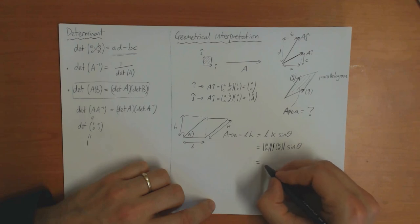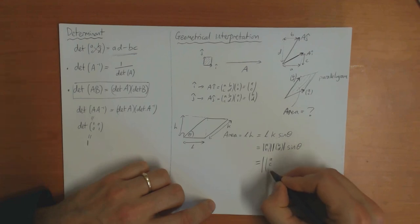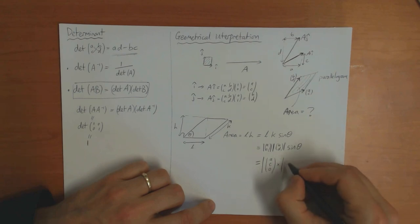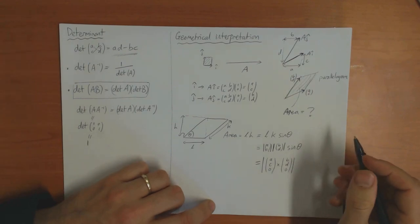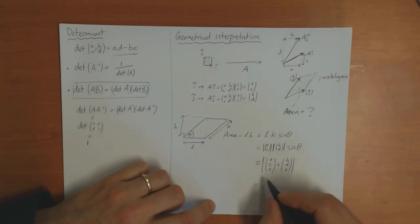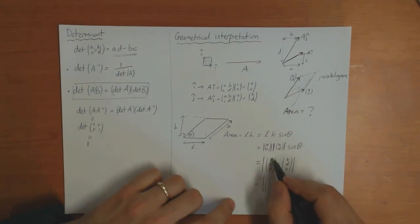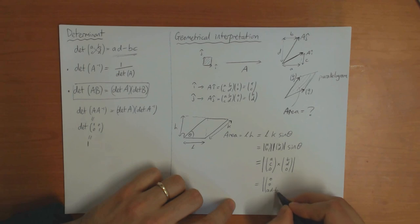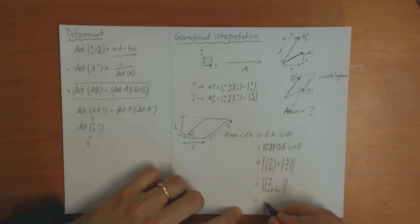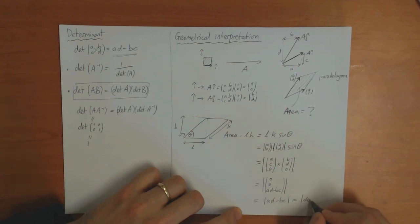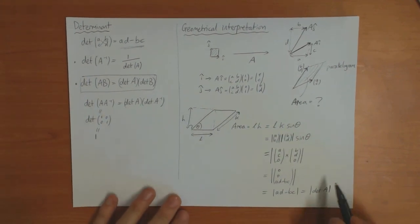Except it's only in two dimensions. We can make it into three dimensions by adding a third component which is zero. So this is equal to the vector product of (A, C, 0) and (B, D, 0). The X component is zero, the Y component is zero, and the Z component is AD minus BC — which is the absolute value of the determinant of A.